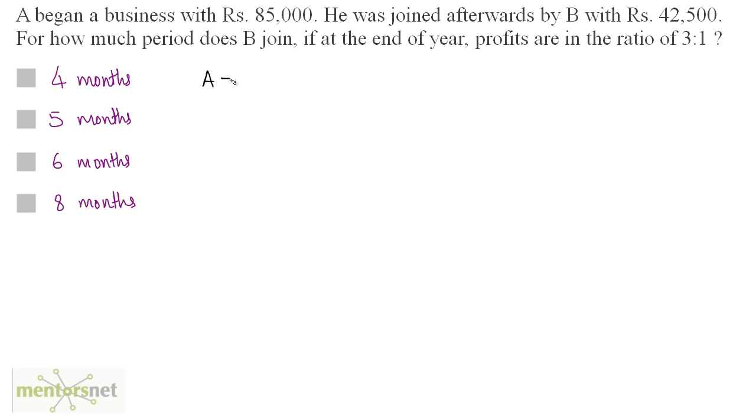Well, it is clear that A joins for 12 months. That is, A begins the business and at the end of year they get the profit. So A is there for 12 months and now let us assume that B is there for X months. We have been given the investments made by A and B which is 85,000 and 42,500 and we know the time periods. Also, the ratio of their profits is given which is 3:1.